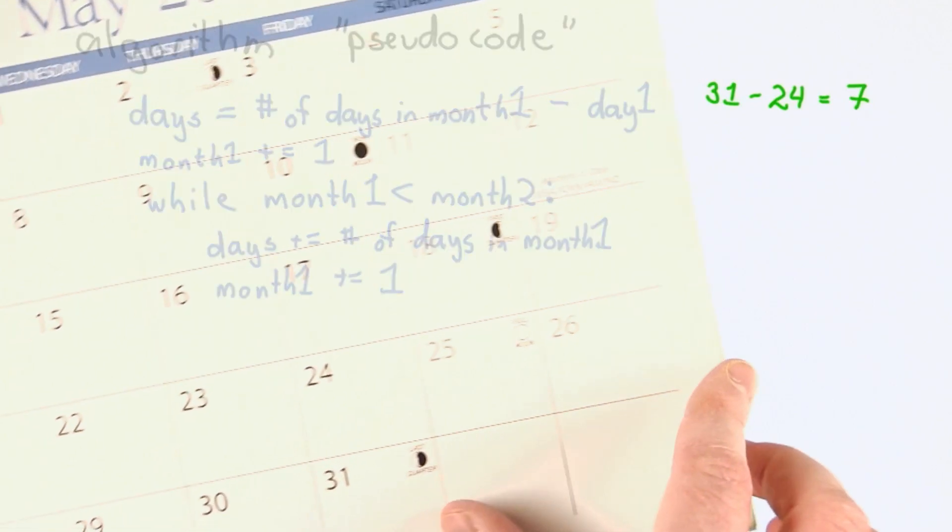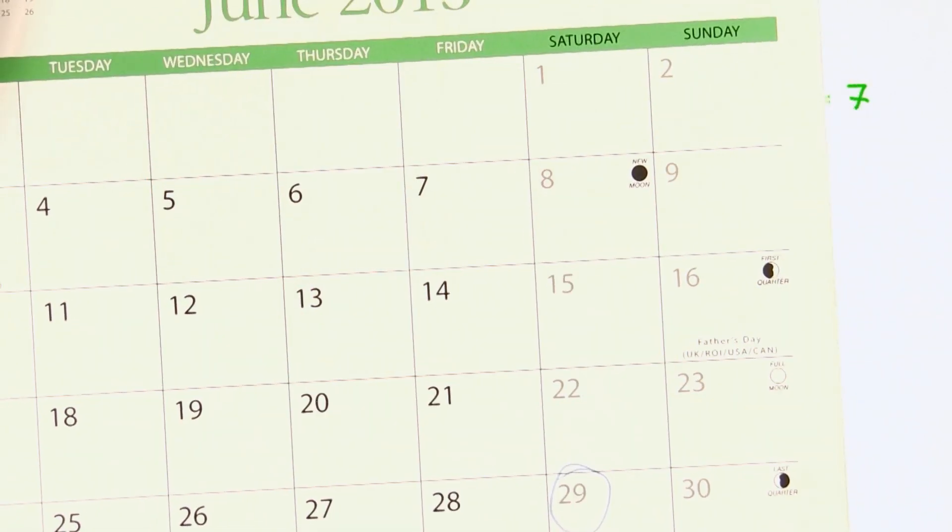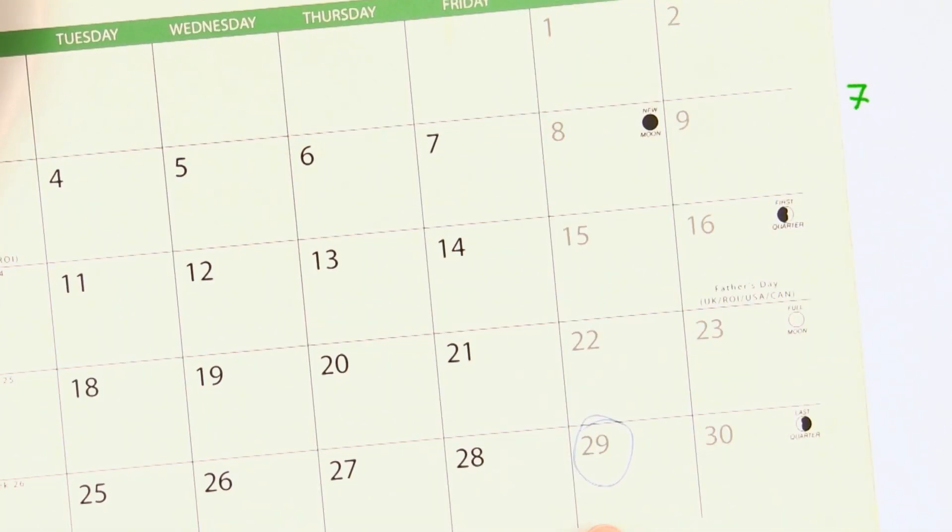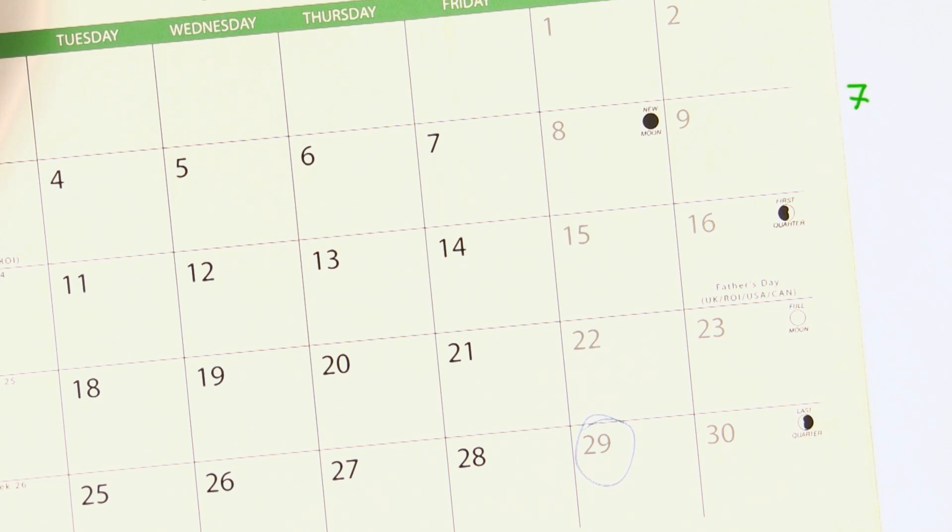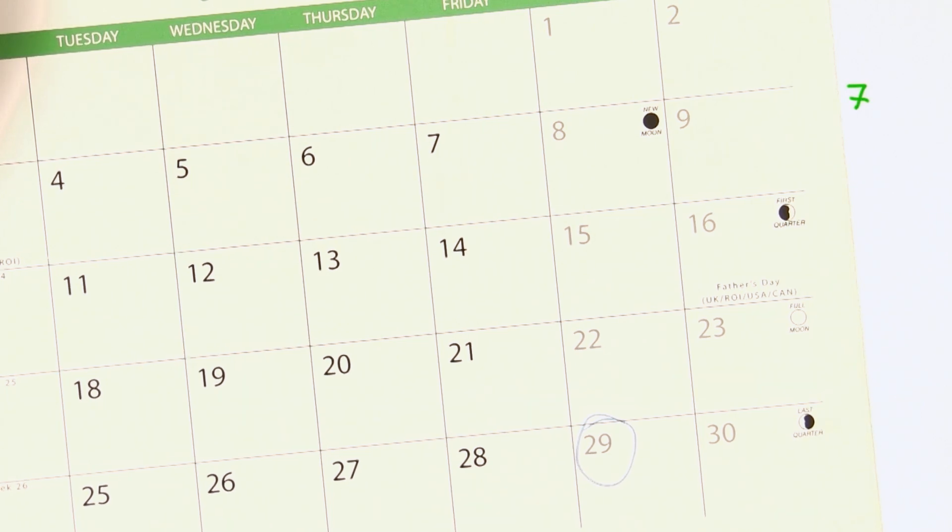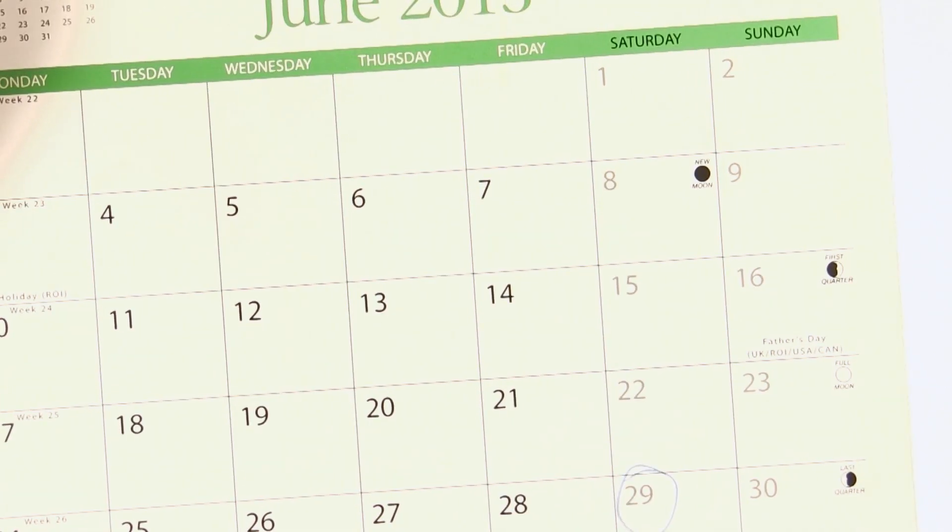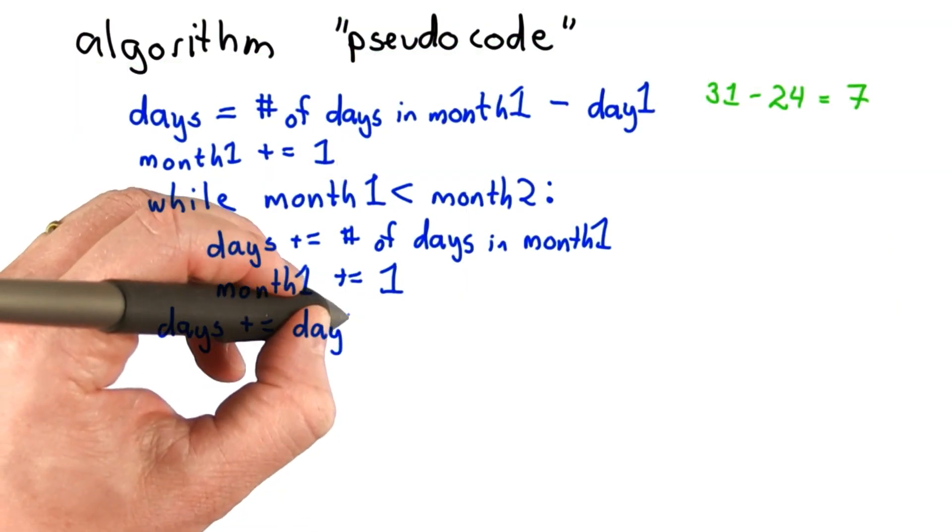Now we're not quite done. We still need to account for the day in the month that we arrived at, and there we just add that day. So if it was day 1 of June, we would add 1 since we didn't actually get into June. Now we're going to add 29 since the 29th was our target day.